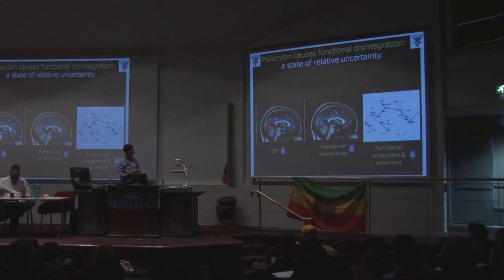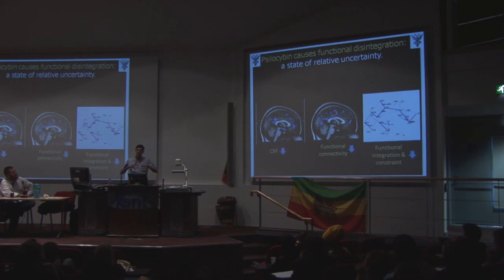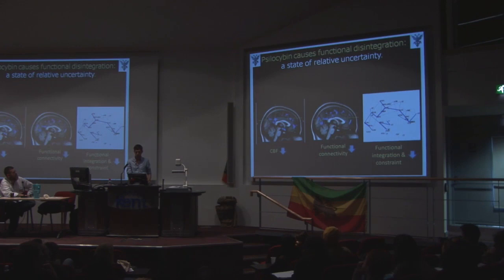To summarise our results: we've seen decreases in the default mode network in these key regions, and decreases in connectivity. These are regions with high hub connectivity — connector hubs in the brain. The explanation we're going with is that we're seeing an essential loss of functional integration, a loss of cohesion — the unifying and holding together of normal waking consciousness — under psilocybin.